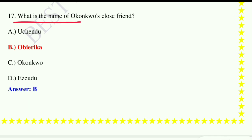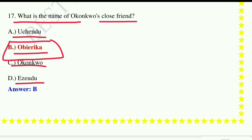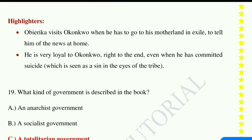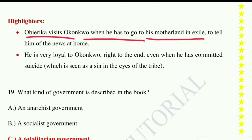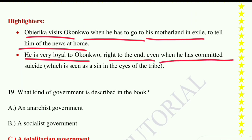What is the name of Okonkwo's close friend? Option A: Uchendu, option B: Obierika, option C: Okonkwo Isidora. The correct answer is option B, Obierika. Obierika visits Okonkwo when he goes to his motherland in exile to tell him news from home. He is very loyal to Okonkwo right to the end, even when Okonkwo commits suicide — which is seen as a sin in the eyes of the tribe.